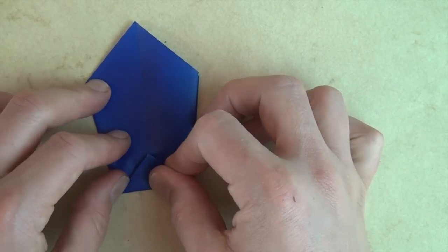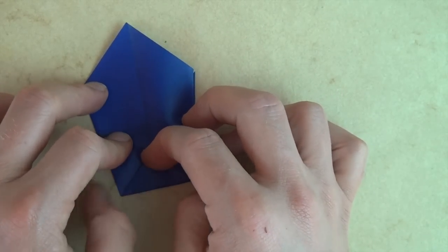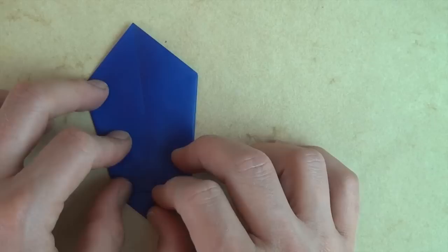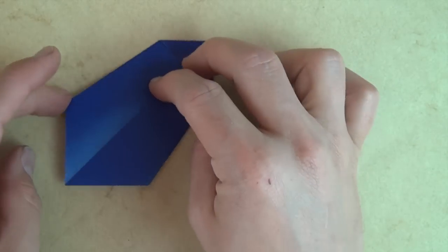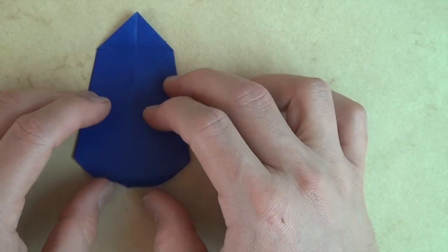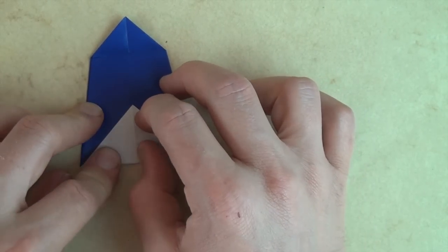We're just reversing the crease. That'll make it easier to open the box and unfold and let's rotate and this last flap just fold it up like this.